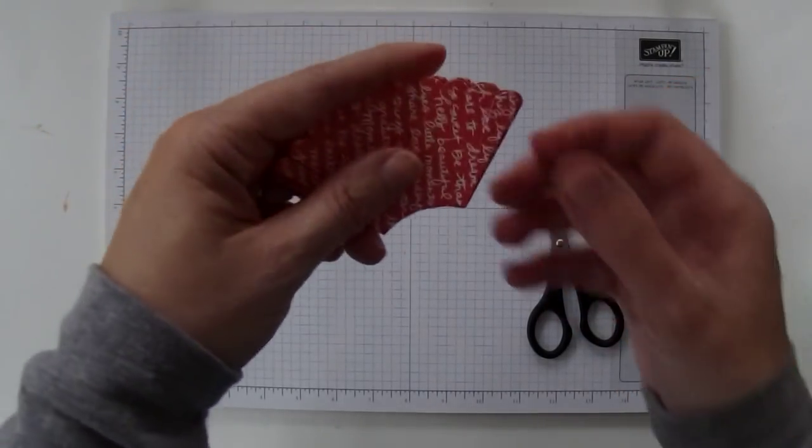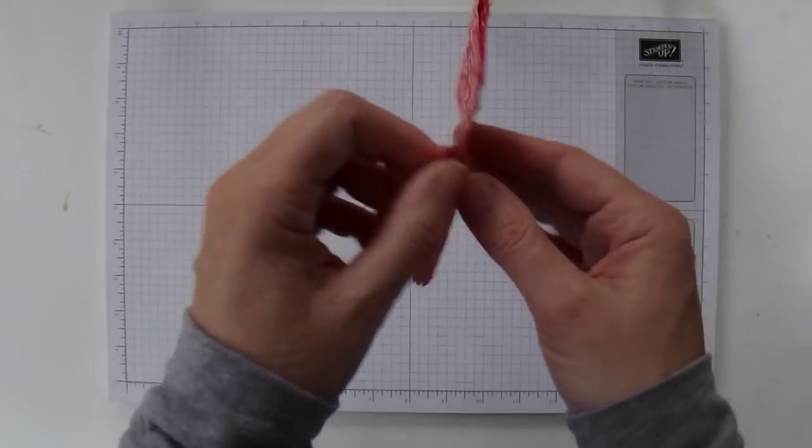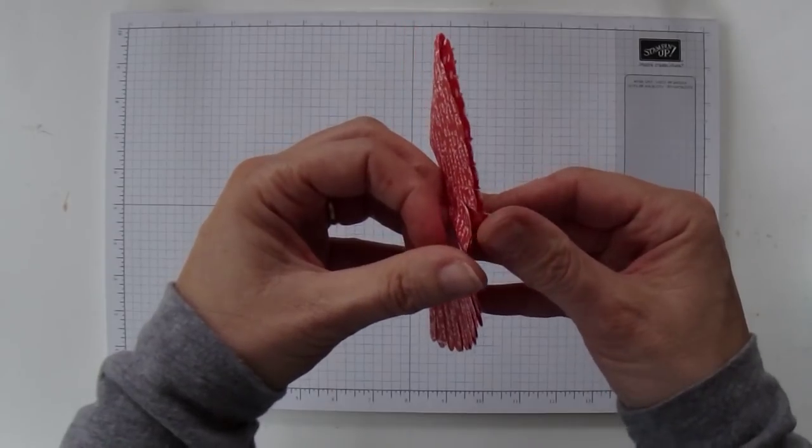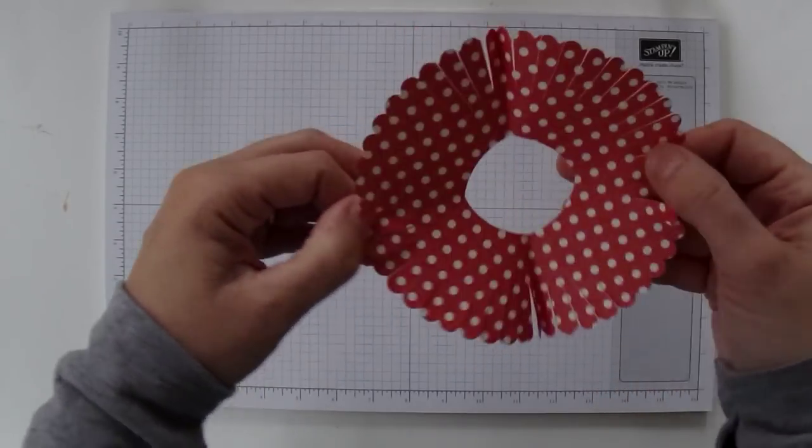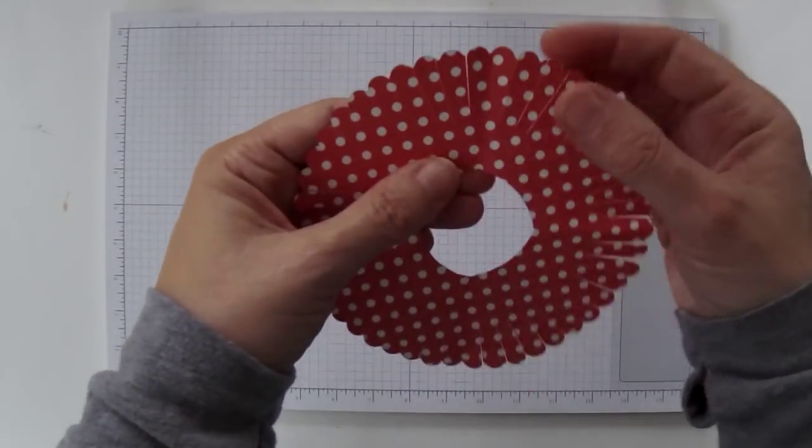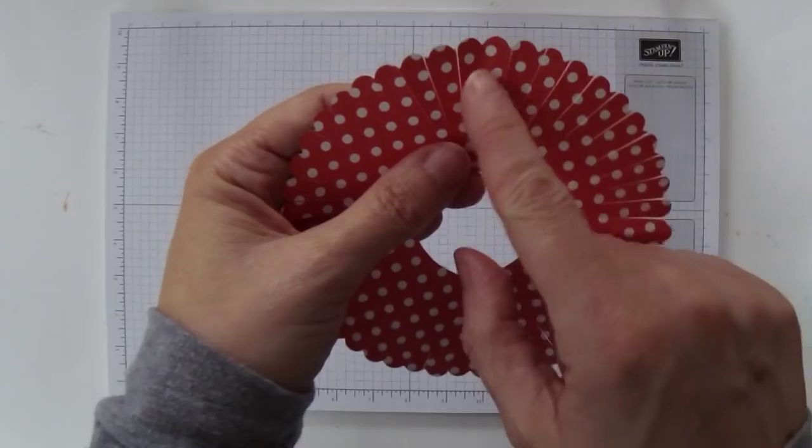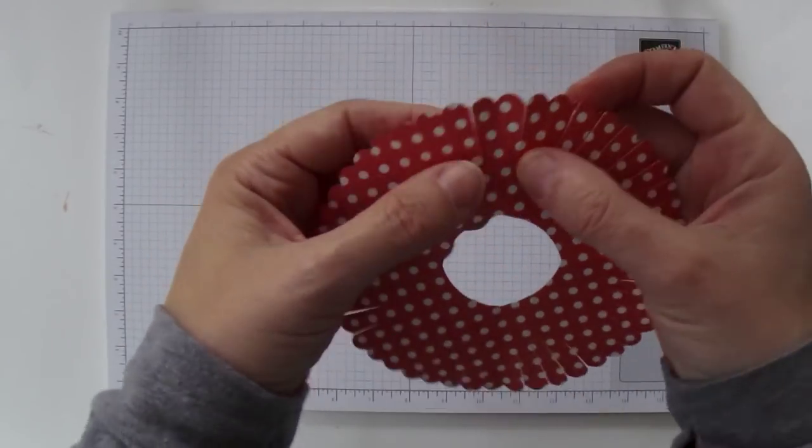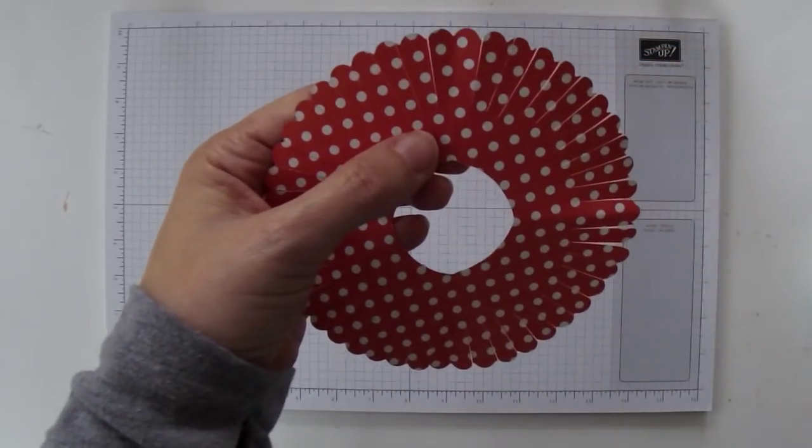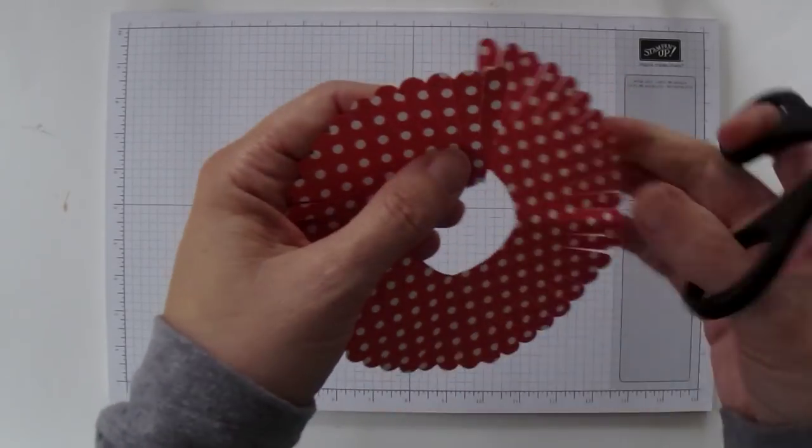And then you can discard that center piece and open up your scallop circle. There's going to be a couple of double scallops here because that's on the end where the fold was and I like to use one of those to cut all the way through like that.